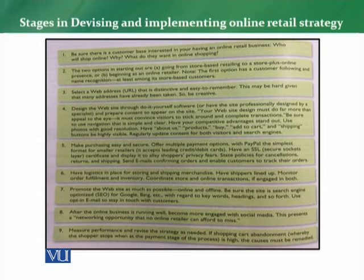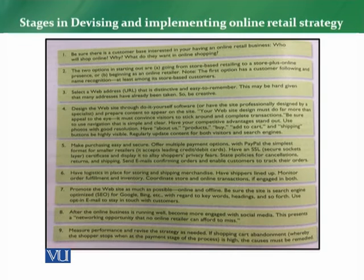The sixth stage is to have logistics in place for storing and shipping merchandise. You need to have shippers lined up, monitor order fulfillment and inventory, and coordinate all online transactions. Online retailers must ensure that the product is delivered to the customer completely and in the right condition. Online retailers need to arrange warehousing, logistics, and shipping arrangements — everything should be properly set up.